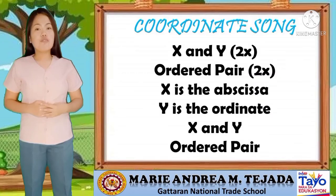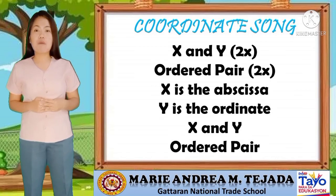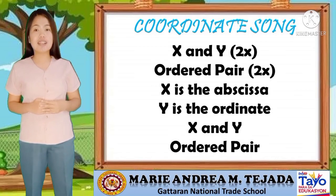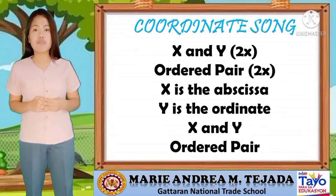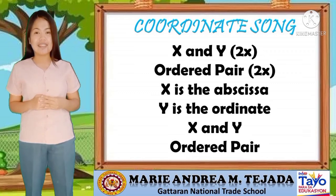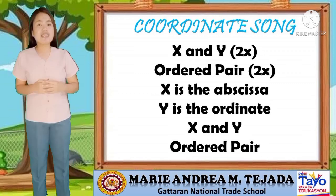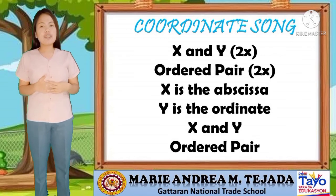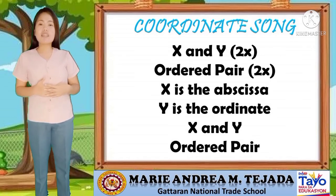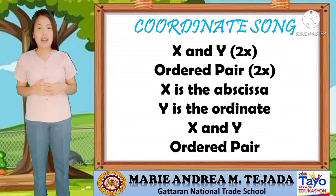For you to further memorize the concept of an ordered pair, let's sing the coordinate song. I will sing first, then afterwards you will sing with me. X and Y, X and Y, X and Y, ordered pair, ordered pair. X is the abscissa, Y is the ordinate. X and Y, ordered pair.